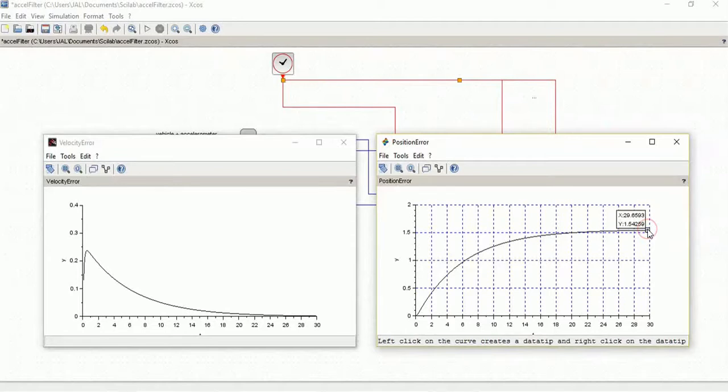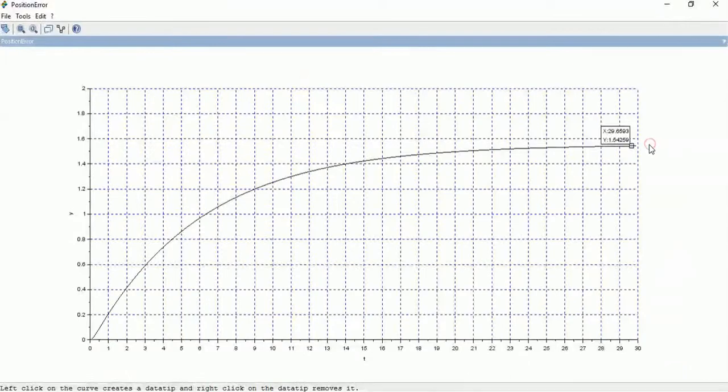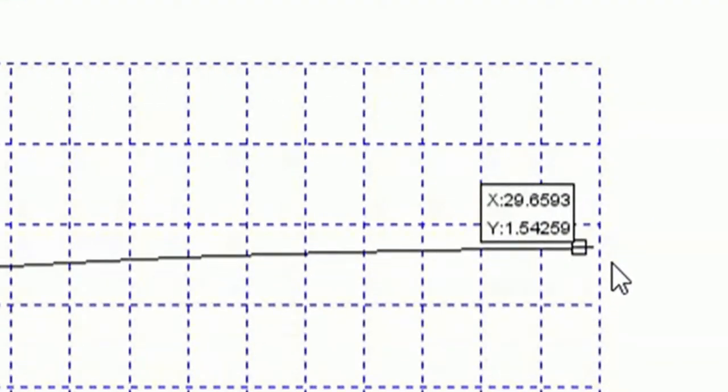Again, everything looks as expected with the velocity error going to zero and less position error. Let's verify that. The final position error approaches the theoretical, as expected.